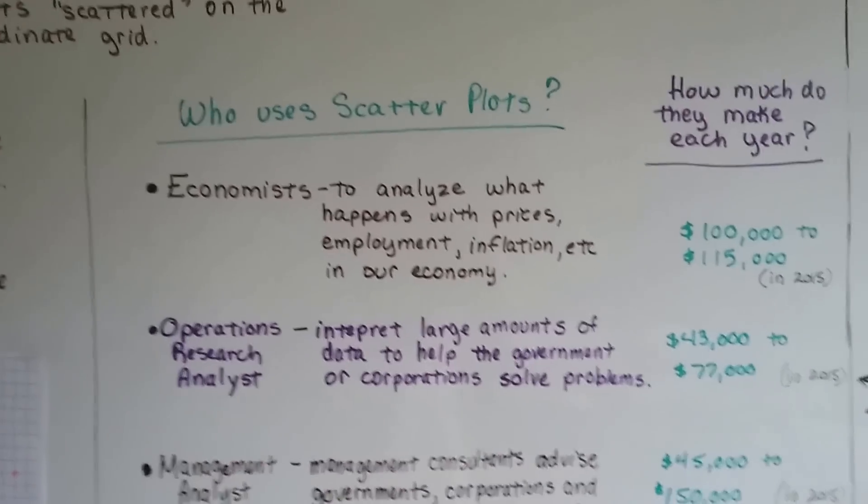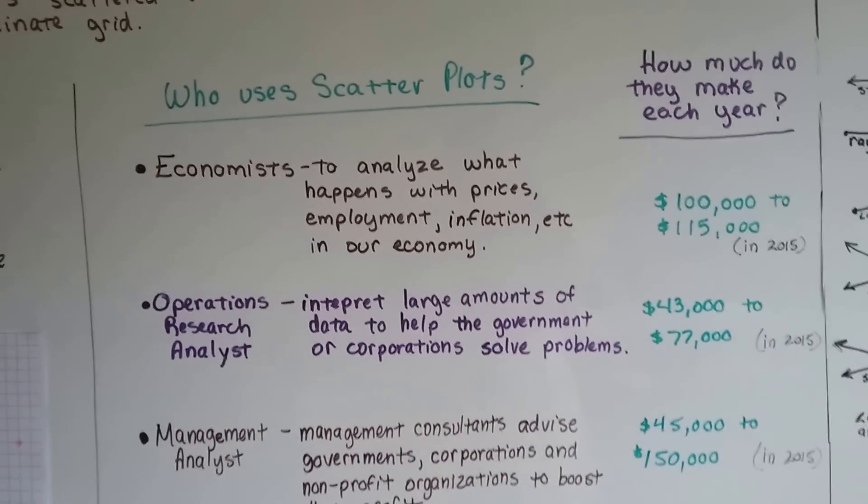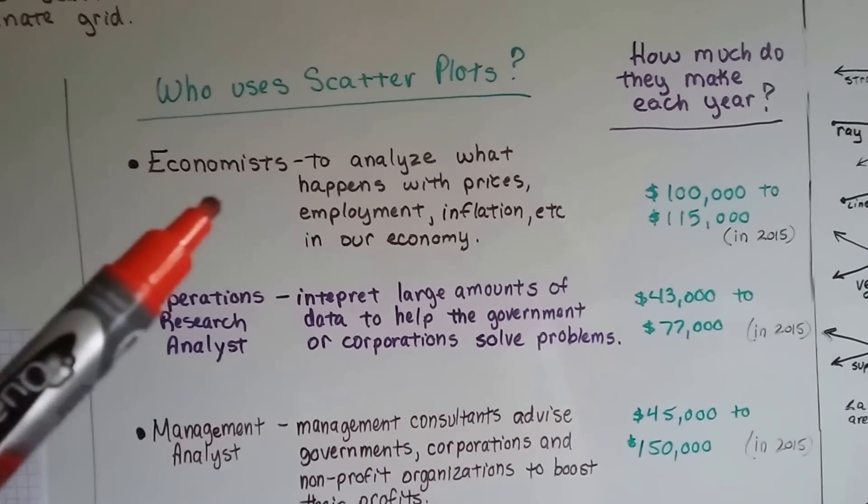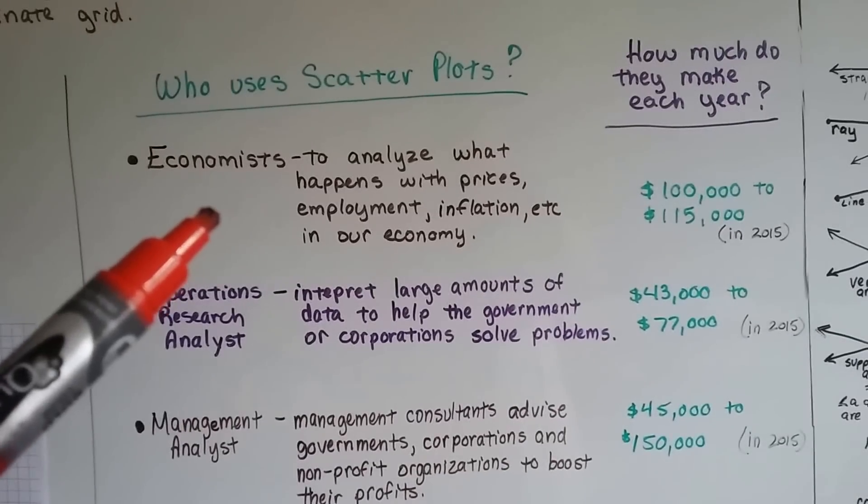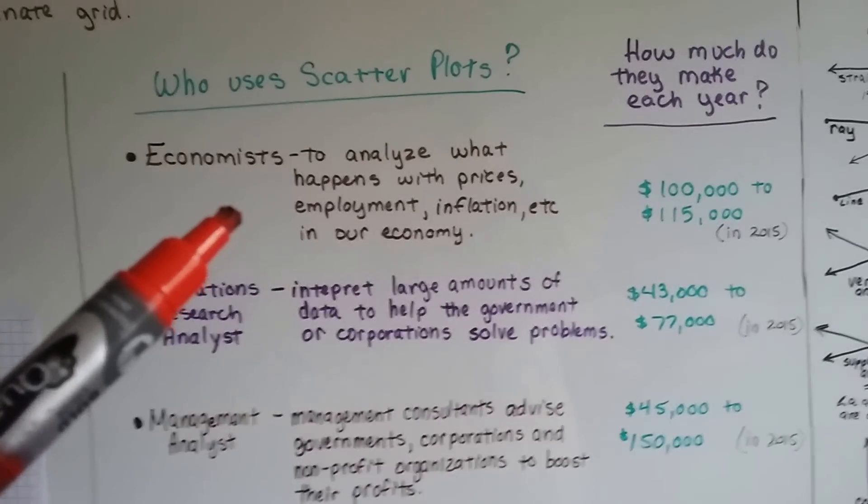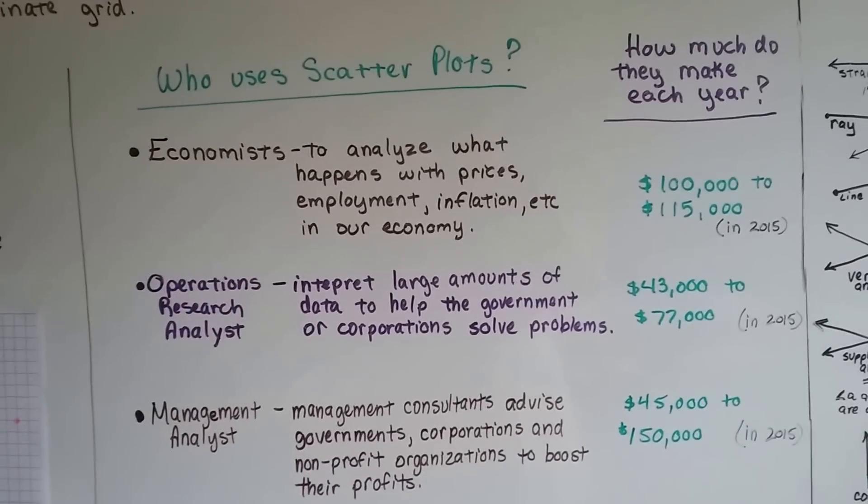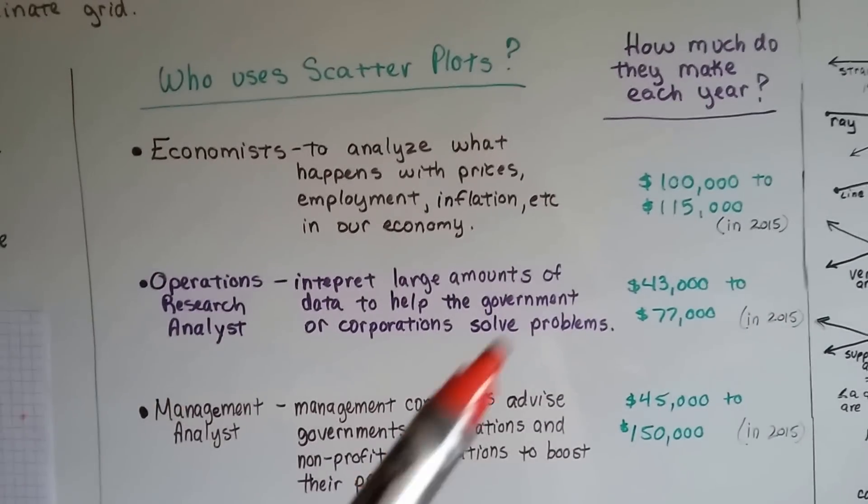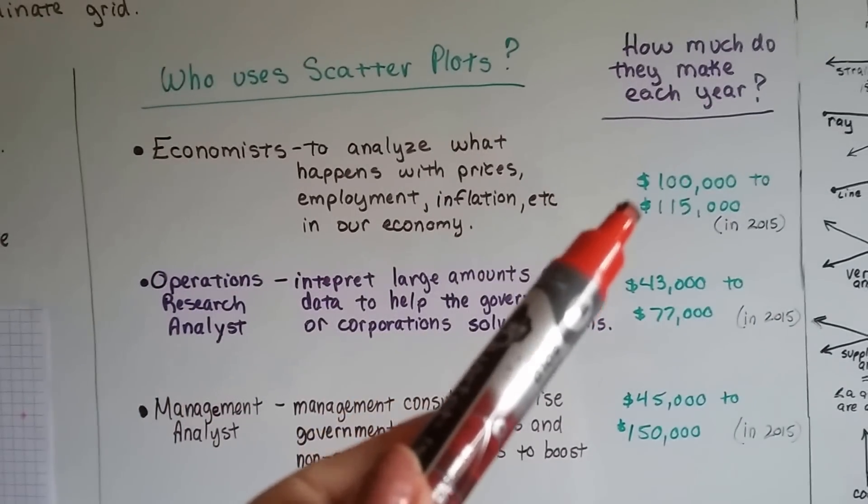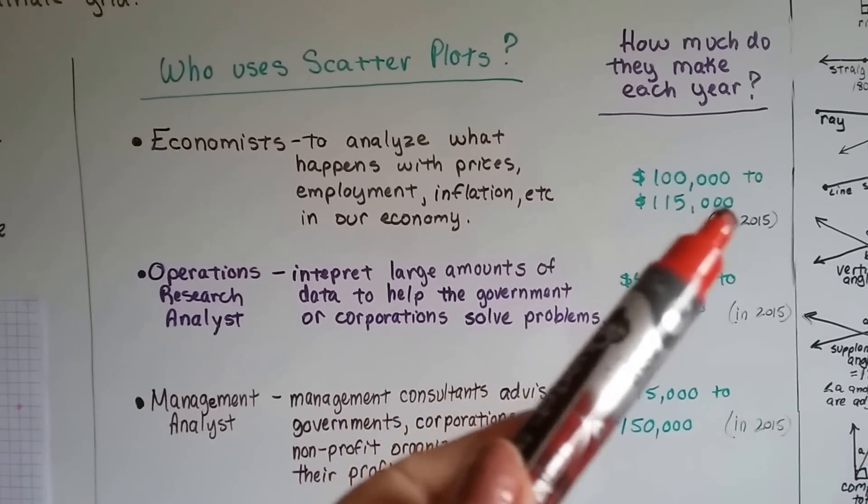Now who uses these scatter plots? What's the big deal? Well, check out how much they make each year. An economist—what they do is they analyze what happens with prices, employment and inflation in our economy. Why did the house prices go up? Why did they drop down? And they make about $100,000 to $115,000 a year in the year 2015.